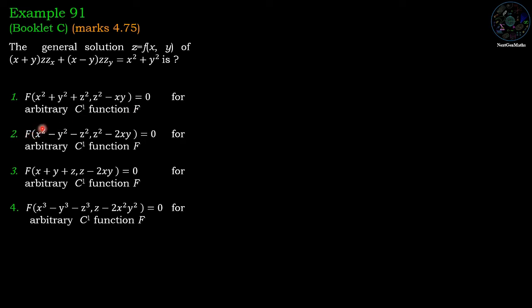Second option: f(x²-y²-z², z²-2xy) = 0 for arbitrary C1 function f. Third option: f(x+y+z, z-2xy) = 0. Fourth option: f(x³-y³-z³, z-2x²y²) = 0.